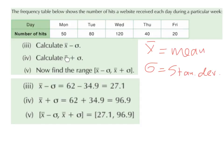Part 4, calculate the mean plus the standard deviation. So it's going to be 62 plus 34.9, which is 96.9.